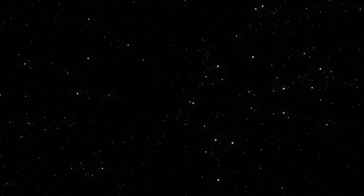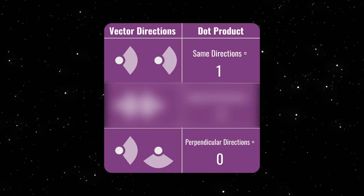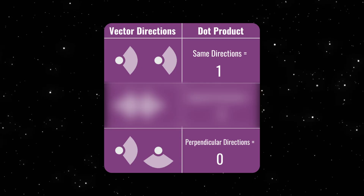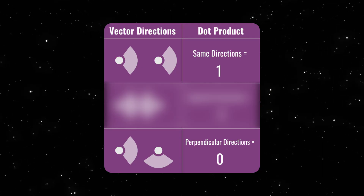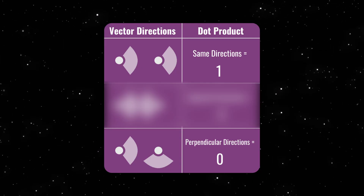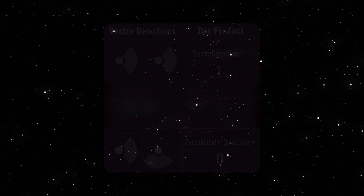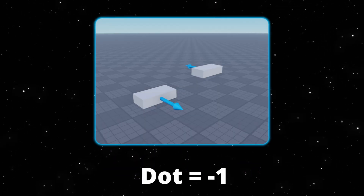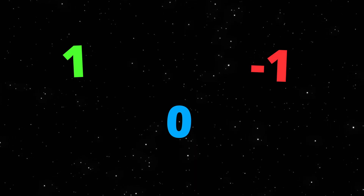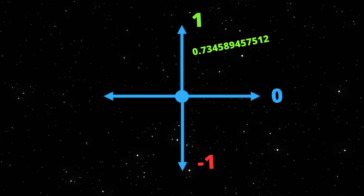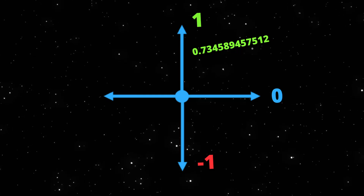So to summarize: if they are looking in the same direction the product is one, at a right angle it's zero, and if they are facing in the opposite direction the dot product would be negative one. You're not always going to have perfect numbers like one, zero, and negative one — a lot of the time you'll have a long decimal that you check in an if statement for your specific scenario.